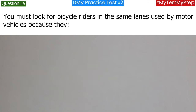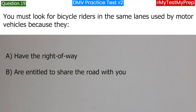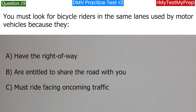You must look for bicycle riders in the same lanes used by motor vehicles because they: a. Have the right of way; b. Are entitled to share the road with you; c. Must ride facing oncoming traffic. Answer: b. Are entitled to share the road with you.